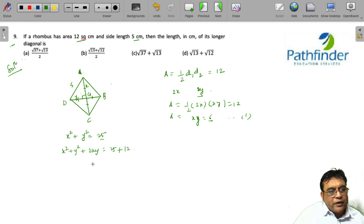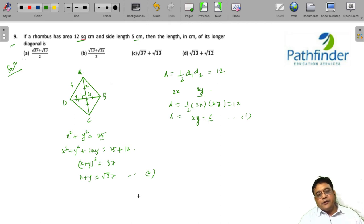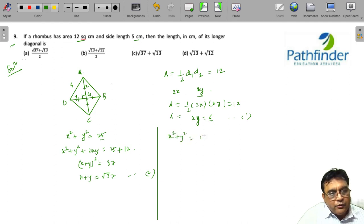So we have (x + y)² is equal to 37, and x + y is √37. This is the second equation. Now with the same equation we can do the same thing but subtract 2xy. When you subtract 2xy from both sides, you will get (x - y)² on the left-hand side and 25 - 12, that is 13, on the right-hand side. So you get x - y is √13.